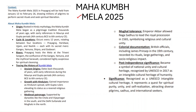The Maha Kumbh Mela has recently started, being held between January 13 and February 26. Its origin can be traced back to the Maurya and Gupta periods, between the 4th century BC and 6th century CE. It occurs every 12 years and rotates between four holy locations — Prayagraj, Haridwar, Ujjain, and Nashik — each associated with sacred rivers: Ganga, Yamuna, Shipra, and Godavari. This year's Mela is at Triveni Sangam, the confluence of the Ganga, Yamuna, and Saraswati rivers.